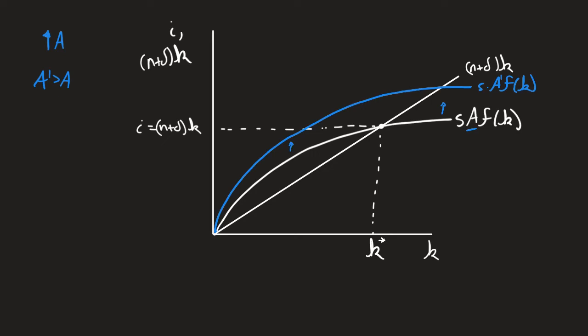Nothing else has changed, so what happens if this level of capital were to stay the same? So in the next period, nothing's changed yet. It hasn't been a convergence yet. This level of capital stays the same.